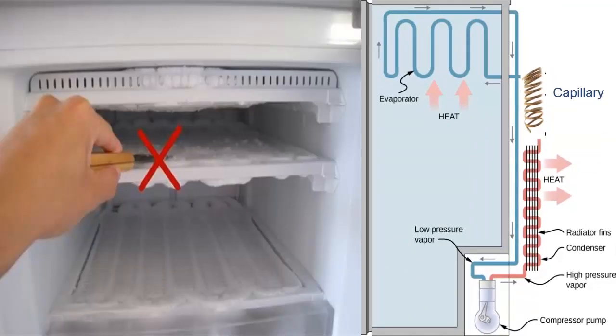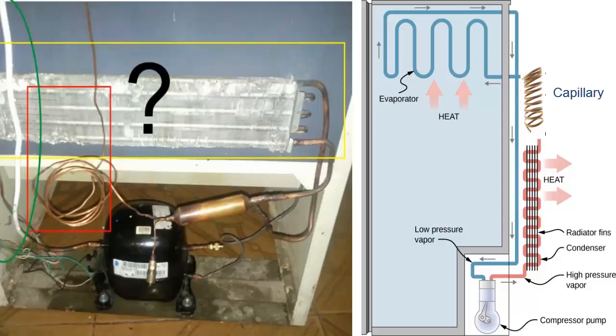Step 9. Visually check for the absence of oil marks, likely indicating a leak. Additionally, remember that an unobstructed capillary tube, working correctly, should not exhibit external freezing.